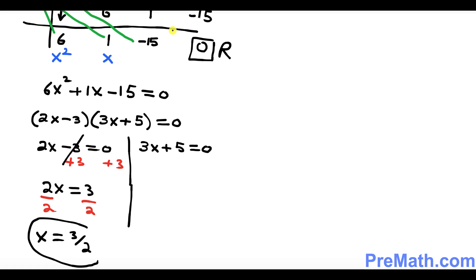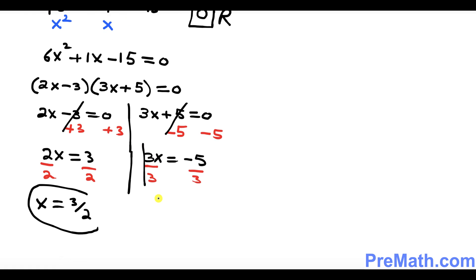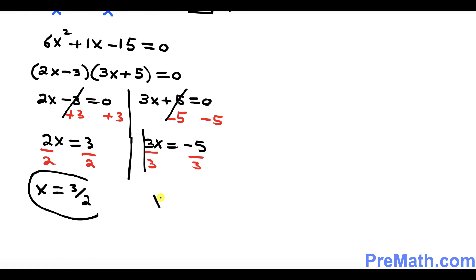Likewise, on this side, we're going to subtract 5 from this side. So this thing is gone. We got 3x equal to negative 5. Now I want you to divide both sides by 3. So this 3 and 3, they are gone. We got x equals negative 5 over 3. So that's your another solution.